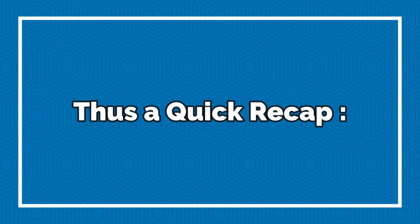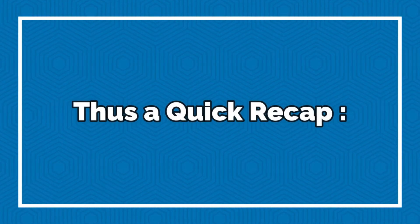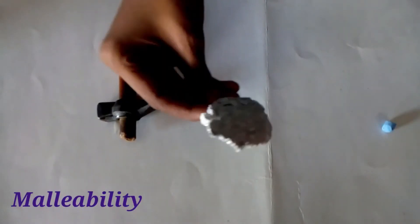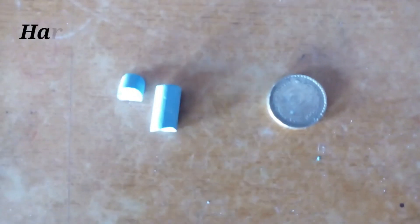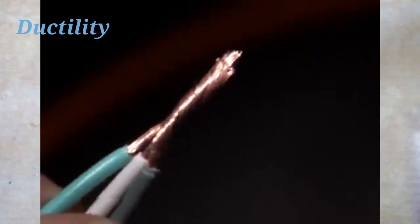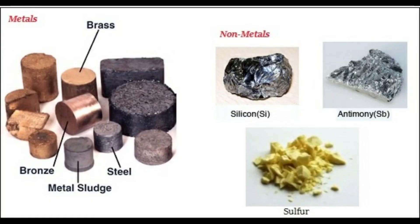As we have learned in the video, various properties of metals and non-metals such as lustre, brittleness, malleability, hardness, ductility and sonority. So, depending on these characteristics, we can use metals and non-metals in our day-to-day life.